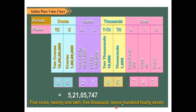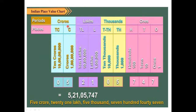In the Hindu Arabic place value chart, we always start from the right. The first digit from the right has a place value of ones, the second is tens, the third is hundreds. Moving further: ten thousands, one lakh (100,000), ten lakhs, one crore (10,000,000), and ten crores. The ninth place value is in the crores period.